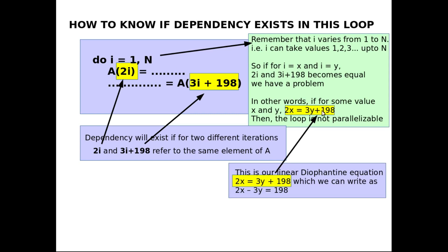And now this is our Diophantine equation. 2x equal to 3y plus 198, which we can rewrite as 2x minus 3y equal to 198. And now from this Diophantine equation, we can see that a is equal to 2, b is equal to minus 3, and c is equal to 198.